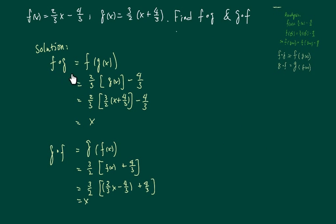Alright, so the solution looks like this: f of g - so whatever g is given, we're going to take the function form of f. So it's two-thirds times whatever I'm given, minus four-thirds. Simplify where I have x.